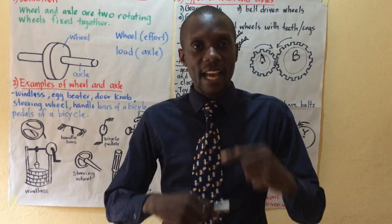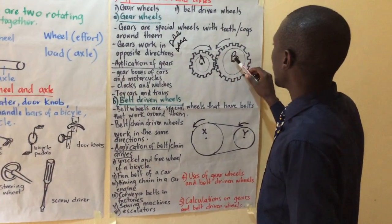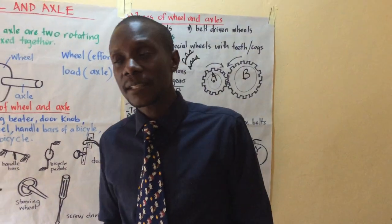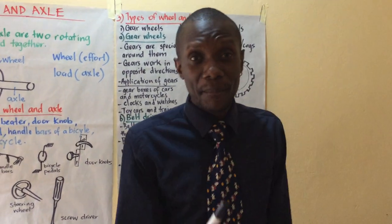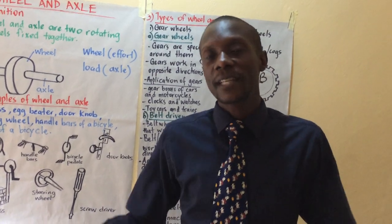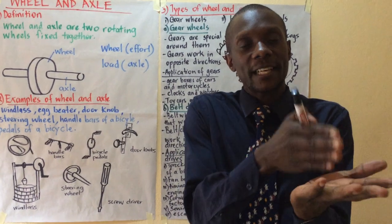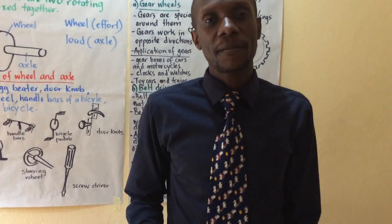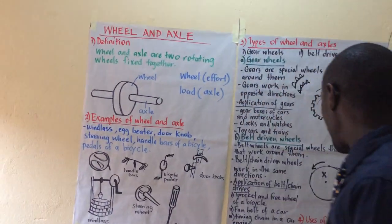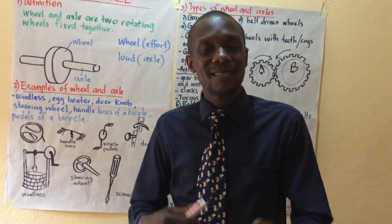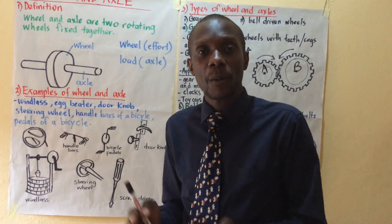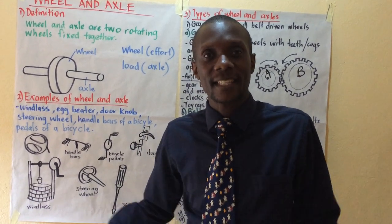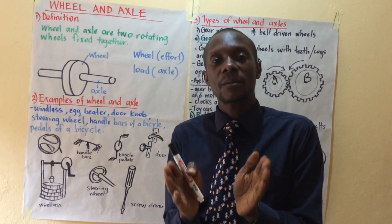The second importance: they change the direction of force. Gear wheels — if the effort is moving this way and we need it to change, we interlace them so that it can move the other way around. So gears help in changing the direction of force. Another importance: conveyor belts in factories help in transporting products. When you go to a soda factory, you will find bottles on the conveyor belt moving from one place to another. Most factories use the conveyor belt system to transport products. Finally, gears and belt drives help in transmitting motion from one point to another — for example, how motion moves from a car engine to the tires goes through the gear box.